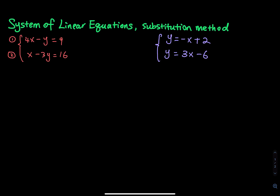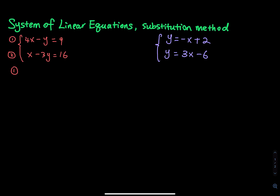For a system of linear equations, here is how we write the system: we have a bracket, the first equation is 4x minus y equals 9, and the second equation is x minus 3y equals 16. This system has two linear equations and two variables, x and y. What I am trying to find is x and y that fit into the system — x equals a number, y equals a number — and when you plug them in, both equations are true.